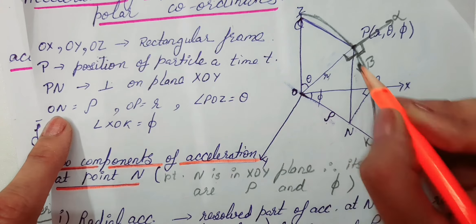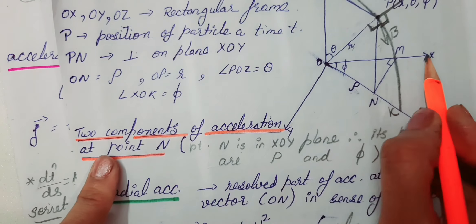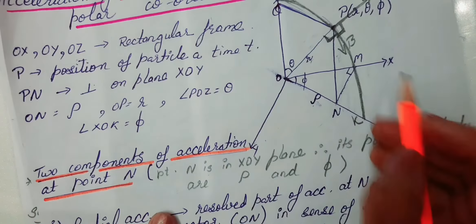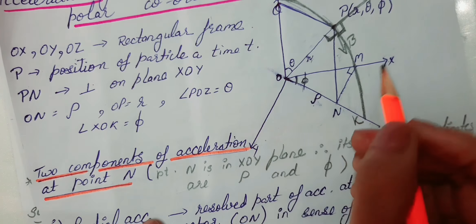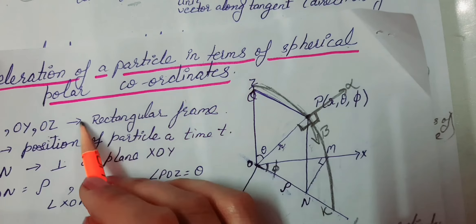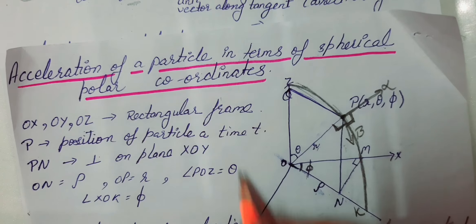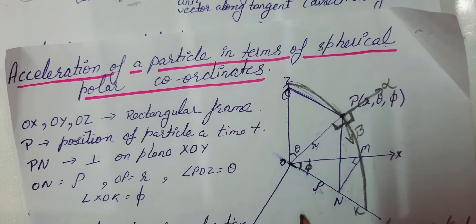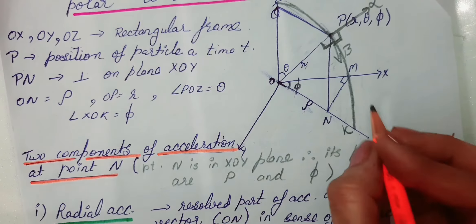OP हमने position vector R मान लिया है। जो angle POZ है वो θ (theta) है — R, O, θ जो polar coordinates में भी होते हैं। X-O-Y plane में जो angle XOK बनेगा उसे φ (phi) assume कर लेते हैं। यह spherical polar coordinates इसलिए कहते हैं क्योंकि अगर इन assumptions के साथ P point को पूरे rectangular frame में rotate करें, तो P point जो path trace करता है वो spherical बन जाता है। इसलिए इस coordinate system का नाम spherical polar coordinate system पड़ा।